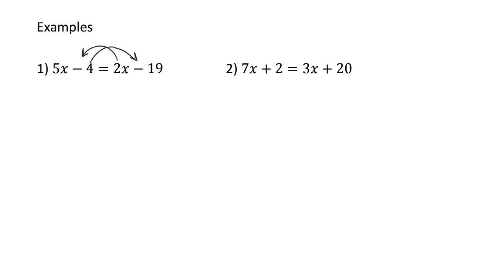So that's step 1 done — I've established what needs to be where. My 5x hasn't moved. This 2x is moving over — opposite side, opposite operation. So if it's 2x on the right-hand side, it's going to become take away 2x on the left-hand side. The negative 19 stays in the same place. This subtract 4 is coming over, so it goes from negative 4 to add 4. That's me done with rule 2 — letters left, numbers right, opposite side, opposite operation.